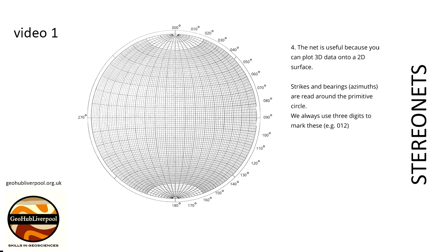Strikes and bearings or azimuths are read clockwise around the primitive circle starting from the North Pole. Divisions from 000 degrees to 360 degrees are marked by the points where the small circles cut the primitive circle. We always use three digits to mark or record these readings.